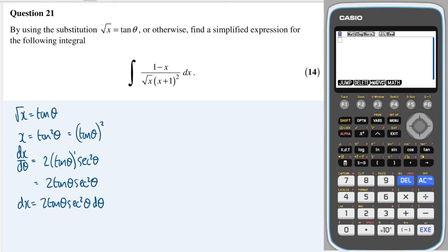Okay, great. Now I think we're just about ready to do our substitution. So I'm going to rewrite it as 1 minus x, and x we know is tan squared theta, all over root x, which we know is tan theta. Open brackets, x plus 1, which is tan squared theta plus 1, close brackets, squared. And then we're multiplying that by dx, which we know is 2 lots of tan theta sec squared theta d theta.